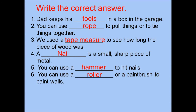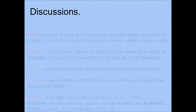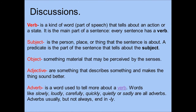For our discussion, we will discuss the verb, subject, object, adjective, and adverb. Verb is a kind of word that tells about an action or a state. It is the main part of a sentence. Every sentence has a verb.